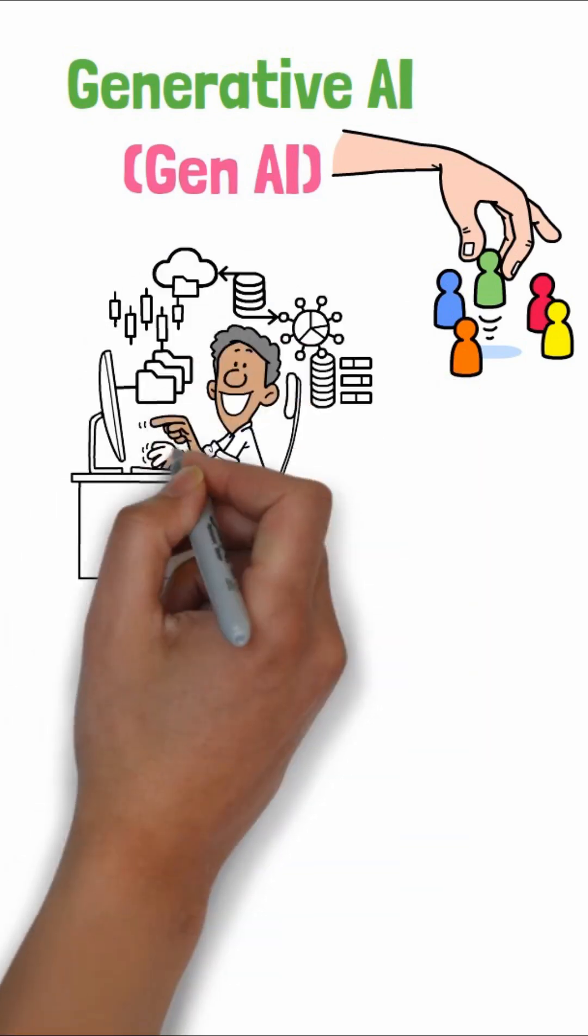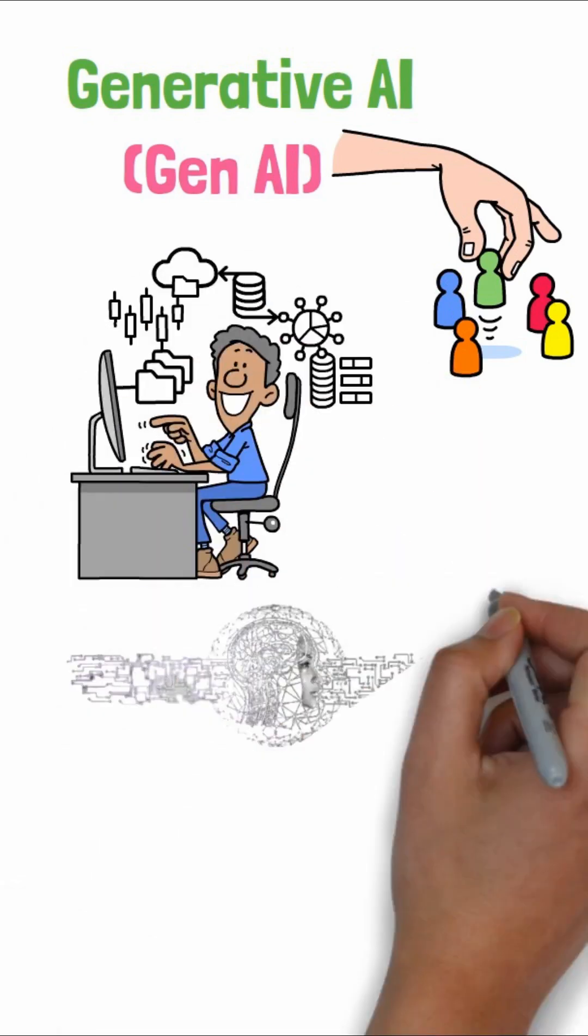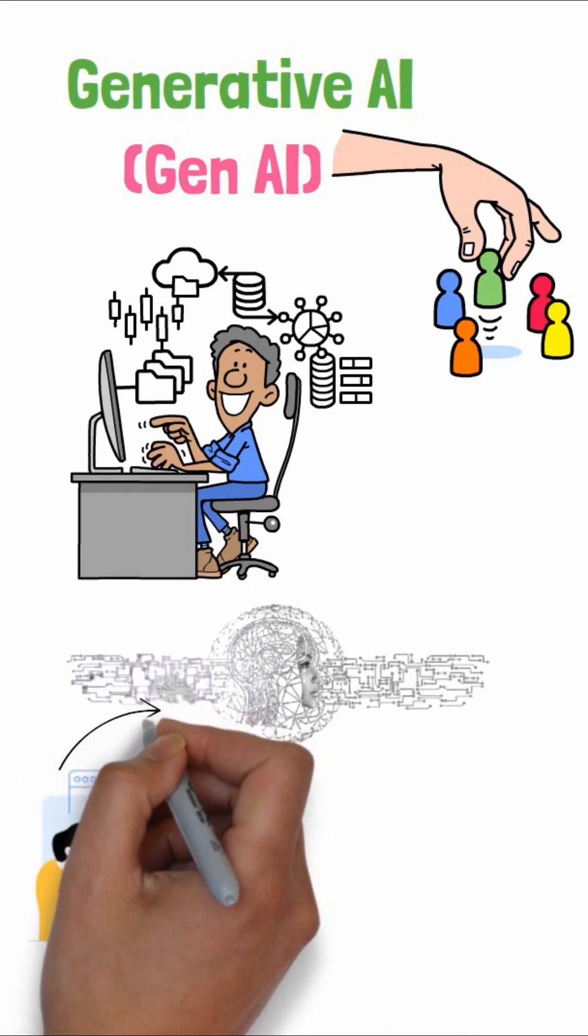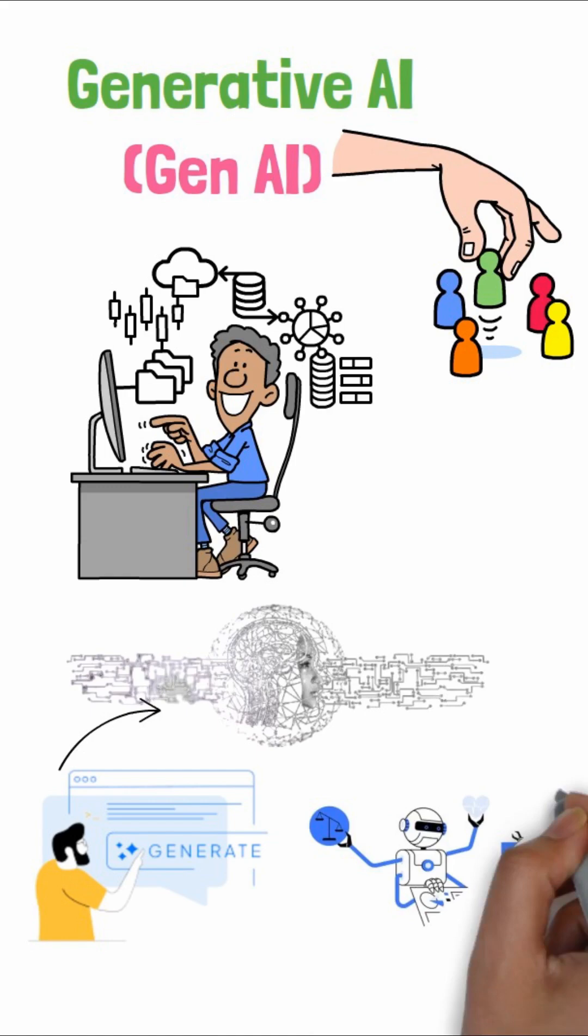If traditional AI is like a smart analyst that finds patterns in existing information, generative AI is the creative partner that uses those patterns to produce something entirely new.